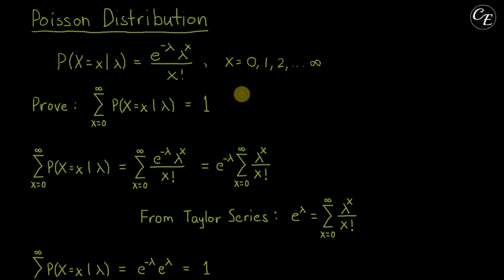Now let's start with our proof. Let me copy this in here. The limits here are from x equals 0 to infinity, so we have x is equal to 0 until infinity.